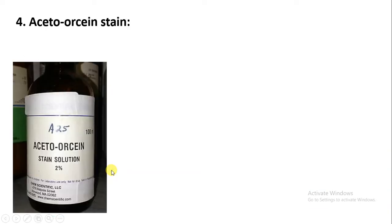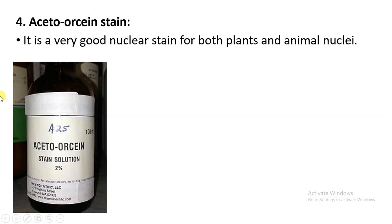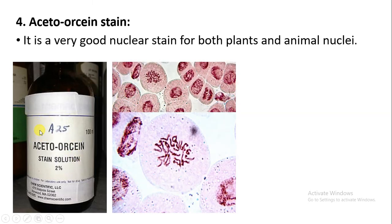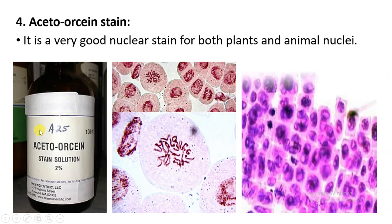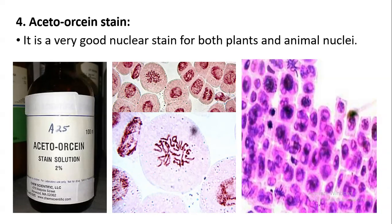The next stain we are going to study is acetoorcine. It is also a very good nuclear stain which is used for plants as well as animals. You can see how plant cells and animal cells are stained by using acetoorcine. It is also an example of a basic stain. This is how we have studied the basic stain. The video ends here. Thank you very much.